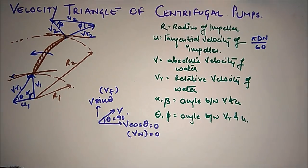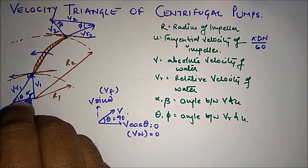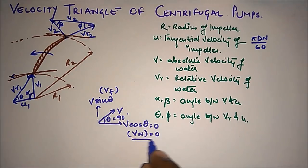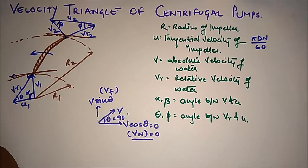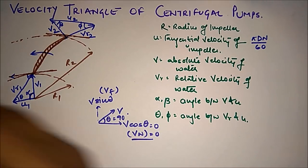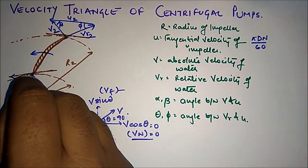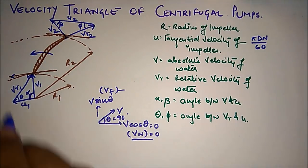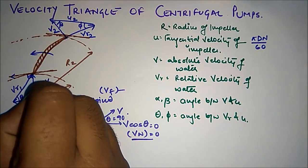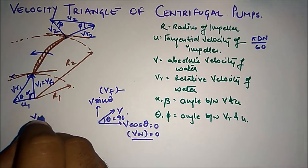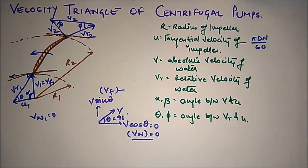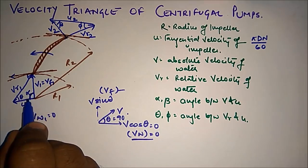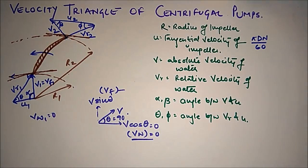When alpha equals 90 degrees, there is no horizontal velocity component — no Vw. The velocity V1 acts only as the vertical component, so V1 equals Vf1 and Vw1 equals zero. This is because the entering velocity V1 is at 90 degrees with the tangential velocity U, so the whirl component Vw1 equals zero and Vf1 is the only component.